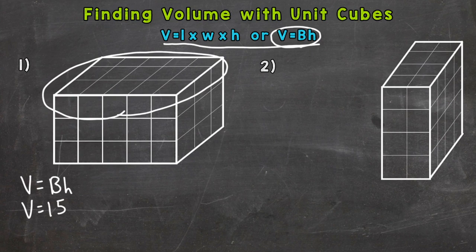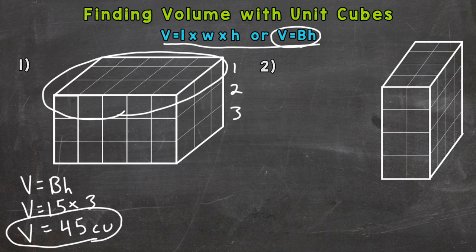Now, we can find the volume, or how many unit cubes take up that shape, by multiplying one layer by how many layers there are. And there's one, two, three layers. So we could do 15 times three, and that will give us how many unit cubes make up that rectangular prism. And 15 times three gives us 45. And I will put cu, which means cubic, units. And that's the volume of that rectangular prism.